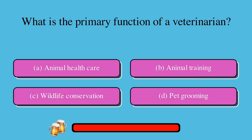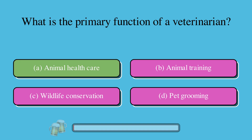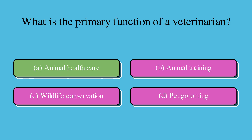What is the primary function of a veterinarian? A. Animal health care, B. Animal training, C. Wildlife conservation, or D. Pet grooming. The correct answer is A. Animal health care.